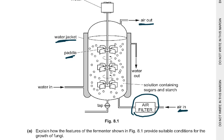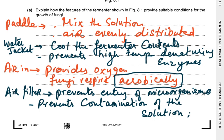So: the paddle mixes the solution and distributes air evenly. The water jacket cools the fermenter content, preventing high temperature denaturing the fungal enzymes. Air in provides oxygen because the fungus can respire aerobically. The air filter prevents the entry of microorganisms present in normal air — which contains bacteria, viruses and fungal spores — so we don't want those growing inside the fermenter. This prevents contamination of the solution.